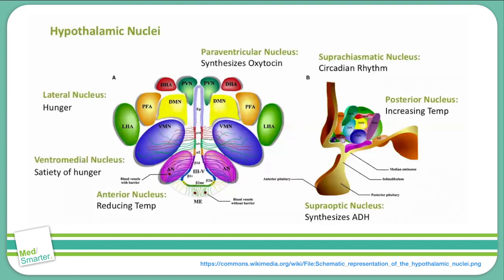This video has been a review of the hypothalamic nuclei. The seven nuclei we discussed are the most commonly tested, and you should be familiar with the function of each one. Most questions arise when one of these areas is damaged. We hope you found this review helpful. Be sure to subscribe to our channel for more videos like this and leave some suggestions in the comments for other topics you'd like to see.